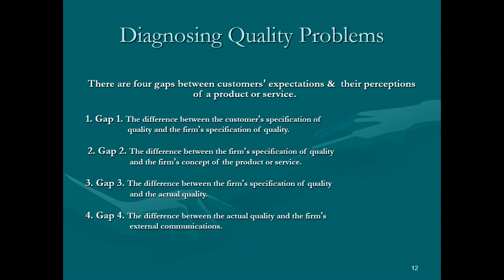The third gap is between the firm's specification of quality — the product or service design — and the actual quality, meaning the actual produced product or provided service. If there is a gap between these two, there is a quality problem. The fourth and final gap is the difference between the actual quality and the firm's external communication with the customer — if the customer does not accept the actual product, that also generates a quality problem.